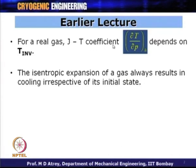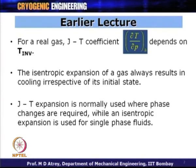As was the case in JT expansion which depends on the initial state, isentropic expansion does not depend on the initial state. JT expansion is normally used where phase changes are required — during JT expansion there is normally a phase change, while isentropic expansion is used for single-phase fluid. The inlet is gas, the outlet should also be gas. In JT expansion the inlet could be gas or a two-phase mixture, and the outlet will be liquid or a two-phase mixture.